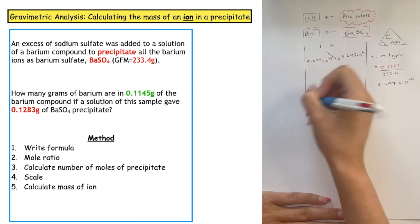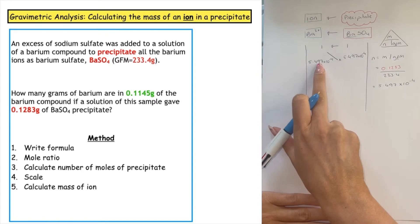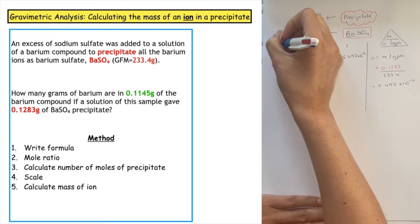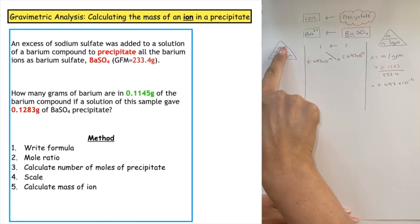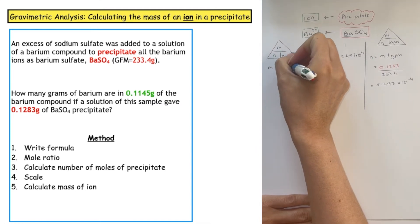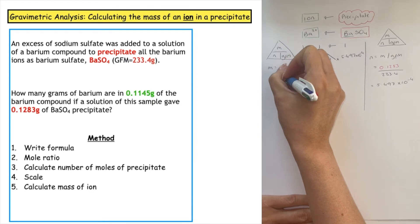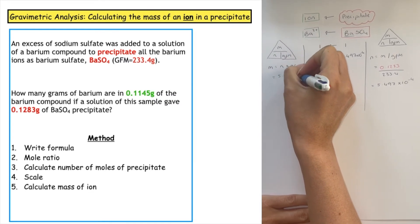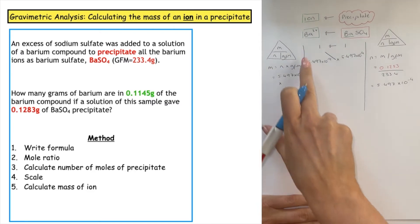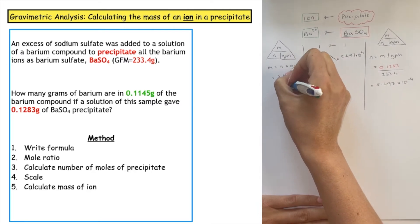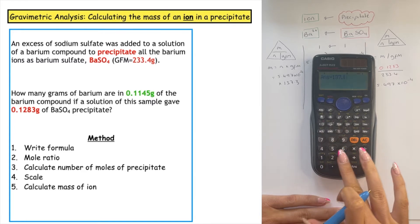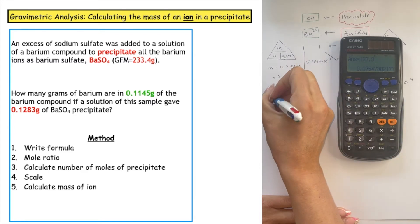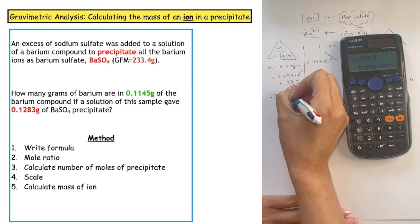The question doesn't ask me to work out the number of moles of the barium ion — it's asking how many grams of barium, so we're looking at mass again. Using the mass triangle, mass = N × GFM. The number of moles we carry through is 5.497 × 10⁻⁴, times by the GFM of barium, which is 137.3. That gives a mass of 0.0754 grams.